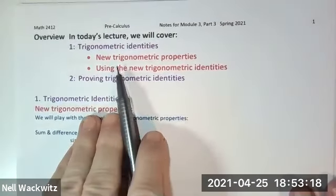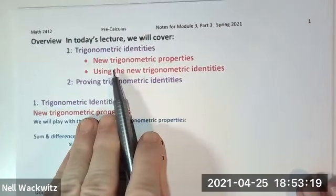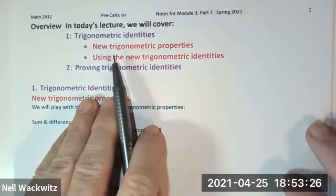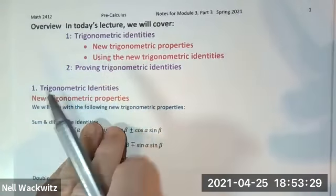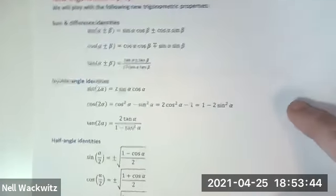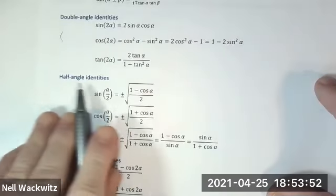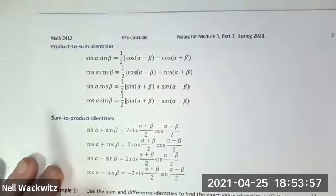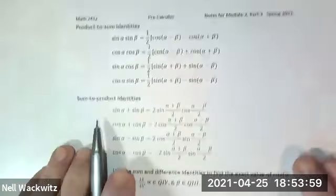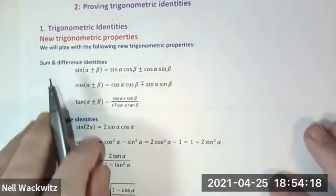Today we're looking at some new trigonometric properties. Last time we had all of the properties we knew at that point — the reciprocal properties, the quotient properties, the properties having to do with period, the properties having to do with even and odd, and now we're moving on. I wanted to give you all of the properties we'll look at in this chapter in one set of notes: the sum and difference identities, the double angle identities, the half angle identities, the power reducing identities, the product to sum identities, and the sum to product identities. You do not need to memorize any of these, but you do need to have them somewhere so you can get to them easily. You can just use these notes.